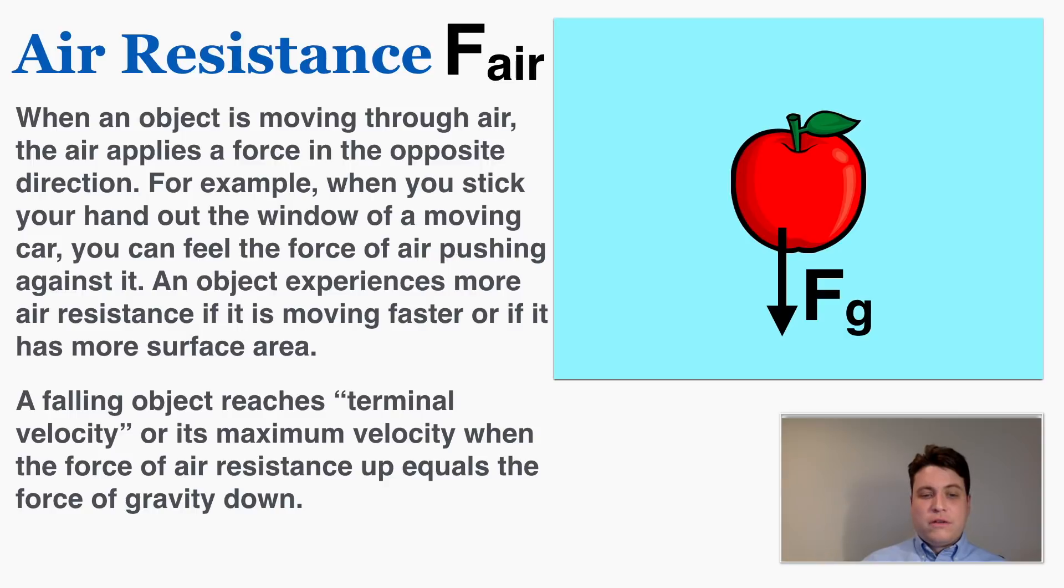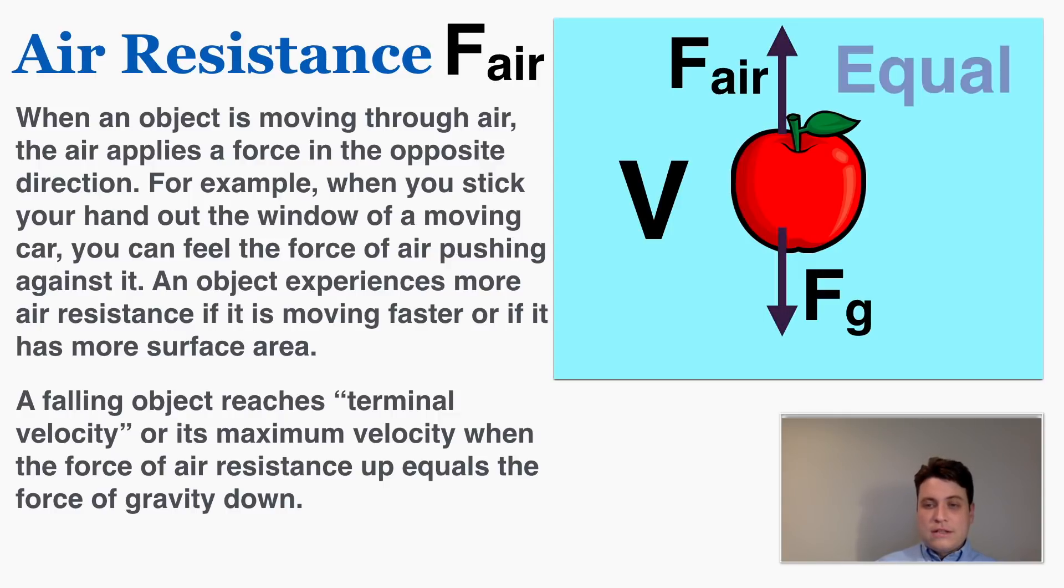A falling object reaches terminal velocity or its maximum velocity when the force of air resistance up equals the force of gravity down. As you can see, as this object is falling through the air due to the force of gravity it's getting faster and faster, and as a result its velocity is getting bigger and bigger. And while its velocity gets bigger the force of air resistance in the other direction gets bigger, because the faster you move through the air the more air pushes back on you. So here, air is pushing back up on the object until it perfectly balances up the force of gravity, and at that moment the object stops accelerating and it hits terminal velocity.